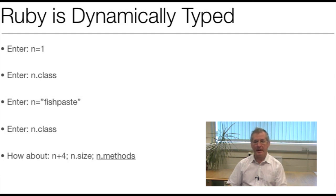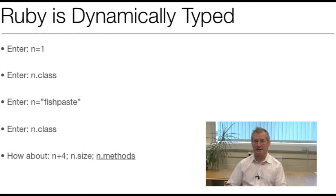We can do other things. Depending on which point you do n plus 4, plus can be overloaded either as numerical addition or as concatenation. You can also get the size of either an integer or a string. And if you're not quite sure what methods are available, you can ask Ruby what methods are accessible. Everything from the most primitive object onwards has some methods associated with it, because the topmost object in Ruby has some built-in methods which will be inherited by everything.